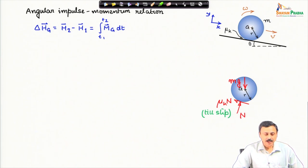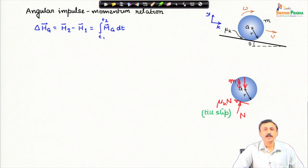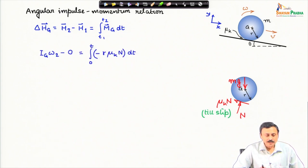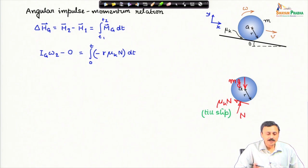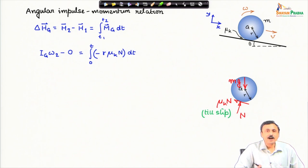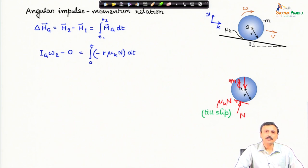First I write down the angular impulse momentum relation about the center of mass. This states that angular momentum in state 2 minus angular momentum in state 1 equals the angular impulse over the time interval. I take state 1 as when the sphere is released with 0 angular velocity, and state 2 as when it starts rolling at time t. I am applying this angular impulse momentum relation over the time of slipping.